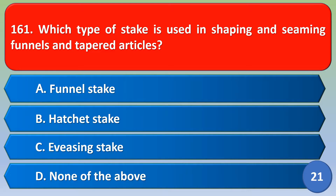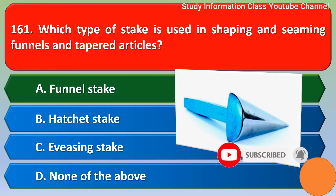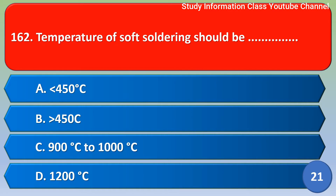Namaste, Sri Rama. Which type of stack is used in shaping and seaming funnels and taper articles? Option A: funnel stack. Option B: add stack. Option C: averaging stack. Option D: none of the above. The correct answer is Option A — funnel stack.